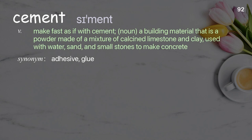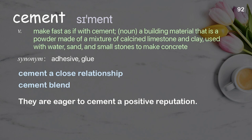Cement: as a verb, to make fast as if with cement. As a noun, a building material that is a powder made of a mixture of calcined limestone and clay used with water, sand, and small stones to make concrete. Examples: cement a close relationship, cement blend. They are eager to cement a positive reputation.